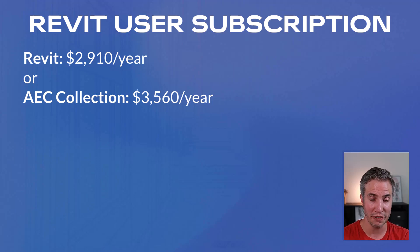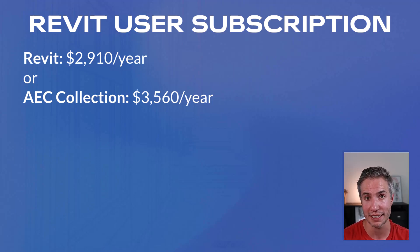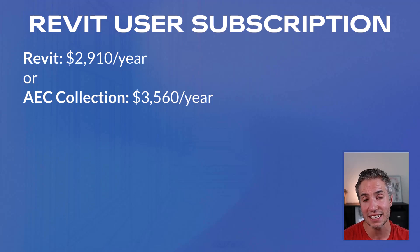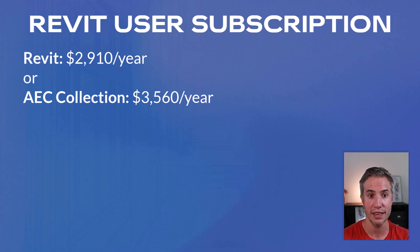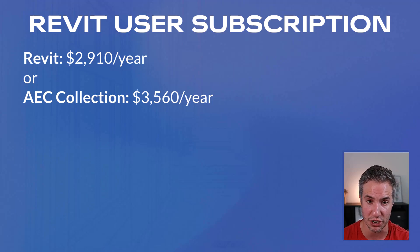First, Revit itself as a standalone costs $2,910 per year. If you get it as part of the AEC Collection — which includes 3DS Max, AutoCAD, Forma, Navisworks, and more — it will cost you $3,560 per year.